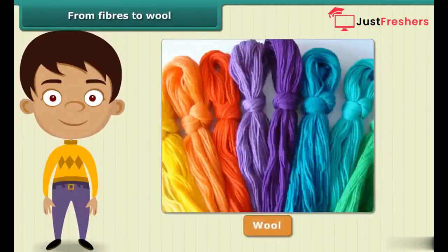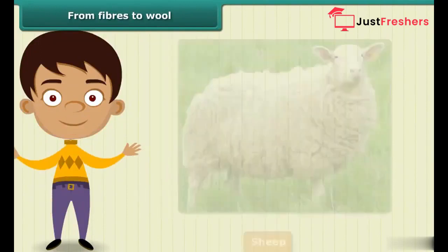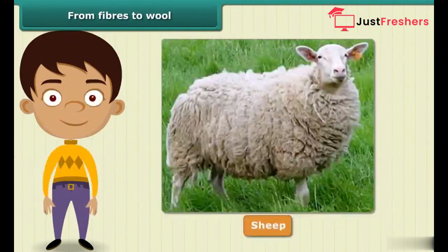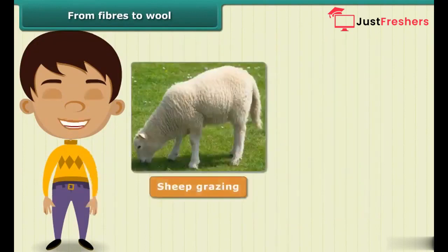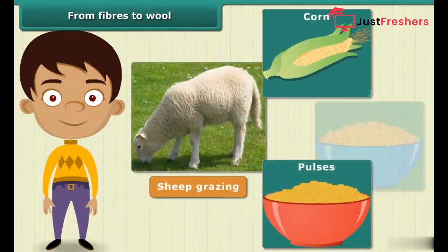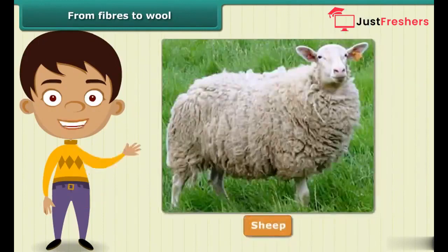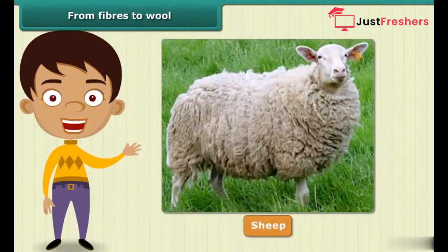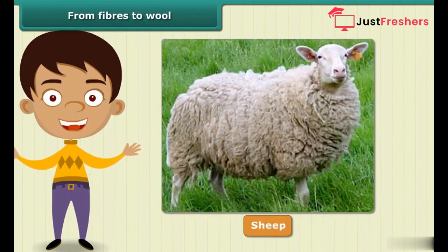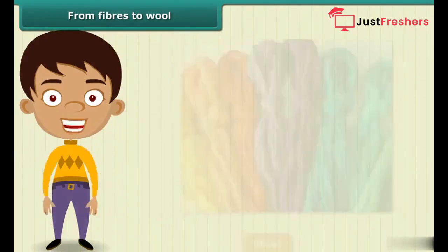For wool to be of good quality, sheep need to be fed a nutritious diet. Apart from what they get from grazing, they are fed a mixture of pulses, corn, and jowar. The well-fed sheep develop a thick growth of hair, known as the fleece, which provides us wool.